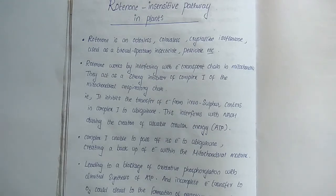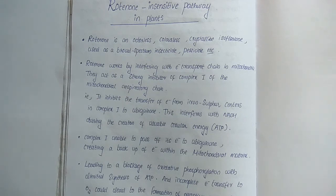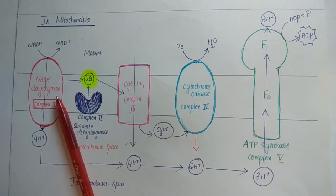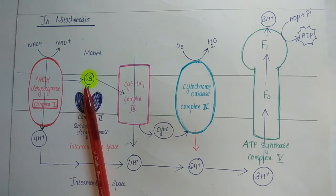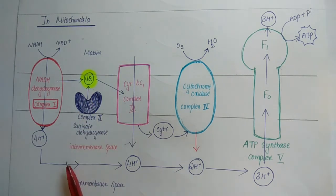The rotenone-insensitive pathway: rotenone is used as an insecticide or pesticide and is an inhibitor of complex 1 of the mitochondrial respiratory chain. It inhibits the transfer of electrons from iron-sulfur centers in complex 1 to ubiquinone, so electrons in complex 1 cannot pass to ubiquinone. This results in blockage of oxidative phosphorylation with limited ATP synthesis. An incomplete electron transfer to oxygen could lead to the formation of reactive oxygen species, which can damage DNA and other components of mitochondria.